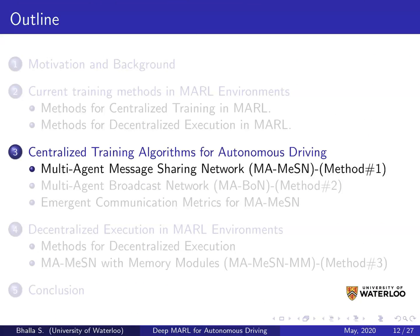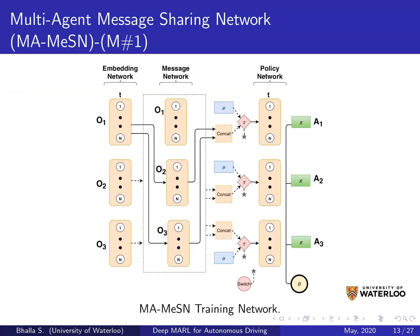The first algorithm presented in this paper is the Multi-Agent Message Sharing Network (MAMSN). It is an extension of Dial and IMS where messages are generated using a dedicated message network and passed to a separate policy network used for generating actions in the environment. The message network is kept separate from the policy network and is trained using cumulative gradients from the policy networks of other agents. This separation of responsibility is important because joint responsibility on a single network adds additional constraints during training.